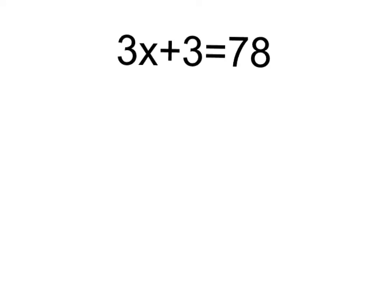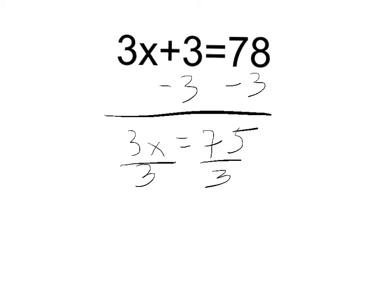So Danielle, what would be the next step we should do? The next step is you can subtract 3 from each side. Yay, subtract 3 from each side. We are left with 3x equals 75. And then you divide by 3 from each side. Yay, x equals 25.